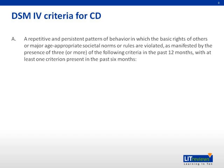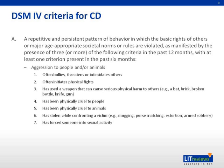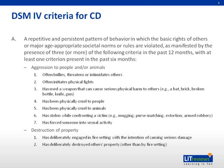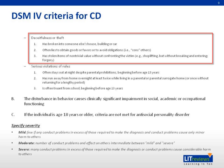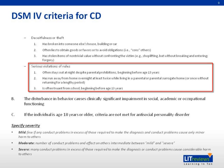The DSM-IV criteria for CD includes a repetitive and persistent pattern of behavior in which the basic rights of others or major age-appropriate societal norms or rules are violated, as manifested by aggression to people or animals — such as bullying, threatening, and intimidating others, initiating physical fights, physical cruelty to people and animals, and forcing someone into sexual activities. It is also exemplified by destruction of property, deceitfulness or theft, and serious violations of rules.